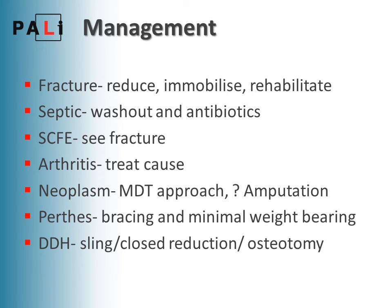SCFE is managed similarly to a fracture, but as mentioned, the other hip has the potential to slip, so keep an eye on that with follow-up. Arthritis is one for the rheumatologist — treating the underlying cause is far too complicated to cover here. Neoplasm requires an MDT approach, with amputation as the last resort. Perthes disease requires bracing and minimal weight-bearing to protect the joint and allow blood supply to return — a sling if caught early, closed reduction with a spica cast if a bit later, and osteotomy to rebuild the acetabulum if left too late.